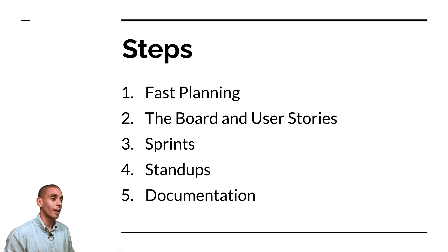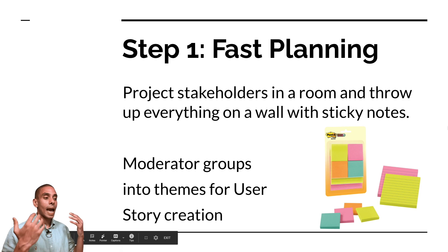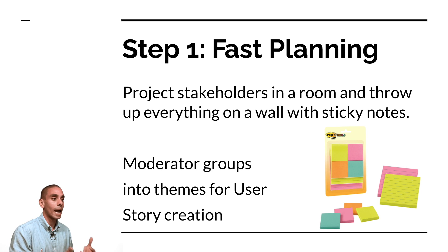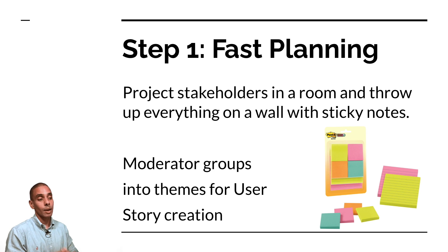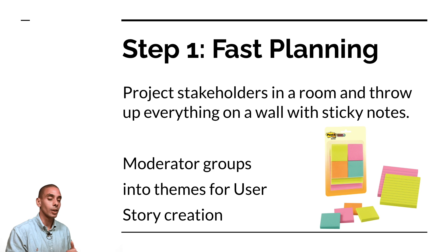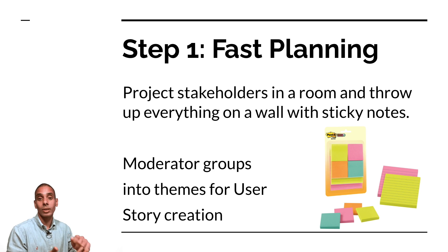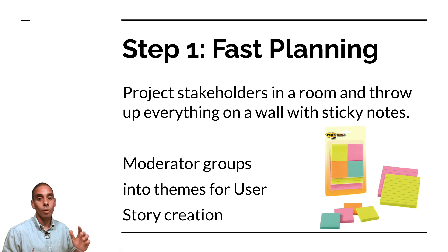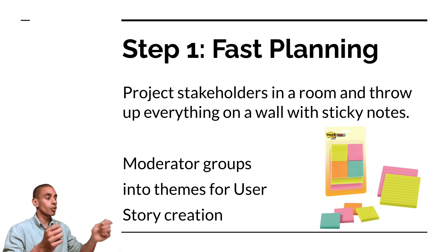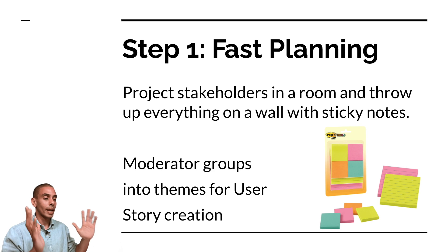Let's kick this off and take a look at fast planning. Fast planning is really a way to quickly capture business requirements and what your users actually want out of the project. The way this step works is by getting all of your project stakeholders in a room, giving them sticky notes, and in a time-boxed period, getting them to write down what they want and place it on a board. Once that's done, a group lead or moderator — ideally someone with experience running data projects — will group these sticky notes into different themes, from which you can create user stories.